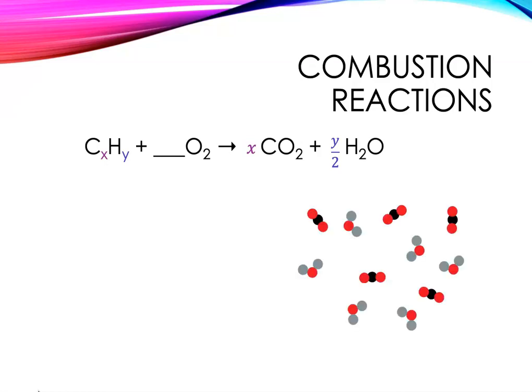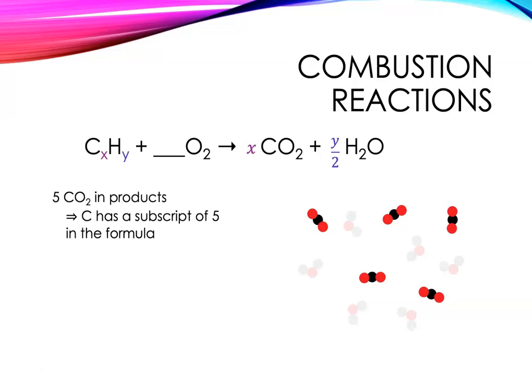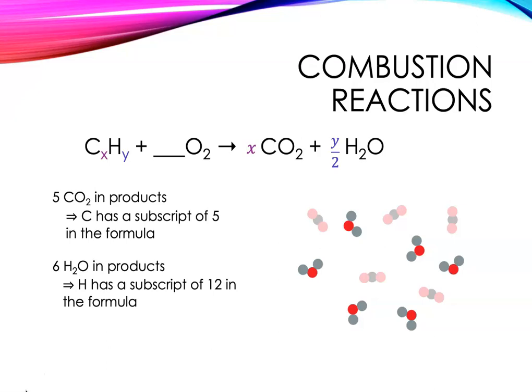Let's look at a particle level model of some products from a combustion reaction for a hydrocarbon. So if we count, we see there are five CO2 molecules in the products, and therefore we can say that the carbon would have a subscript of five in that hydrocarbon formula. Similarly, if we count again, we see that there are six H2O molecules shown in the products, and that means the hydrogen would have a subscript of 12 in the formula. And therefore we can state with confidence that this hydrocarbon has the formula C5H12.